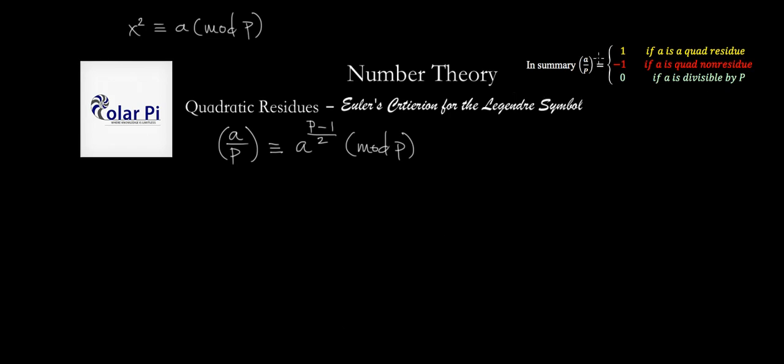But this here is just a definition—it doesn't actually give us a way to calculate a over P. So if we wanted to know, for example, what 5 over 13 is, that is whether 5 over 13 is 1 or negative 1. If it's equal to 1, it means that 5 is a quadratic residue mod 13; if it's negative 1, that'd mean 5 is a quadratic non-residue mod 13.